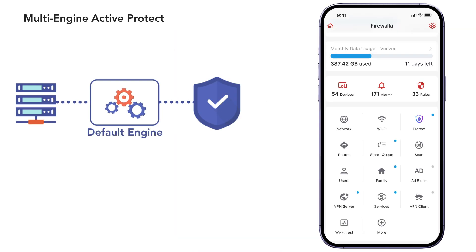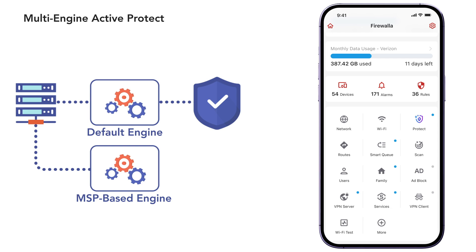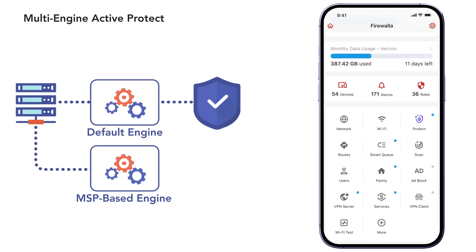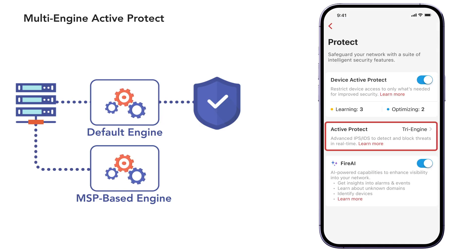Up next, we've enhanced Firewalla's intrusion detection and prevention system, introducing Multi-Engine Active Protect. By having different engines processing network traffic in parallel, we've increased the depth of coverage of our protection analysis. To manage your Active Protect engines, tap Protect from your main screen and tap Active Protect.